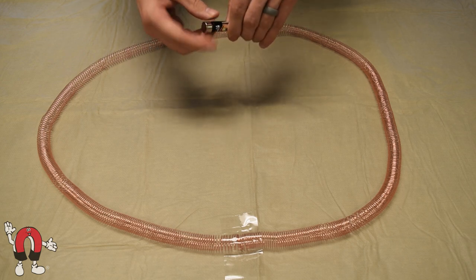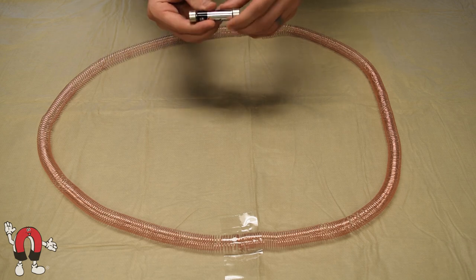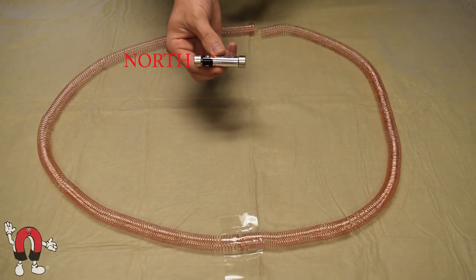You could do north out or south out, but basically make sure that if the battery wasn't there, you're holding the magnets so that they're repelling each other.